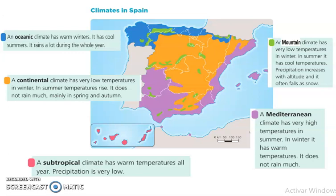A continental climate. It has very low temperatures in winter. In summer, temperatures rise. It does not rain much, mainly in spring and autumn.